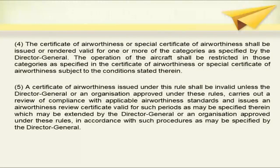The CoA or special CoA shall be issued or rendered valid for one or more categories as specified by the Director General. The operation of the aircraft shall be restricted to those categories as specified in the CoA or special CoA. A certificate of airworthiness issued under this rule shall be invalid unless the Director General or an approved organization carries out a review of compliance with applicable airworthiness standards and issues an airworthiness review certificate, which may be extended by the Director General or an approved organization.